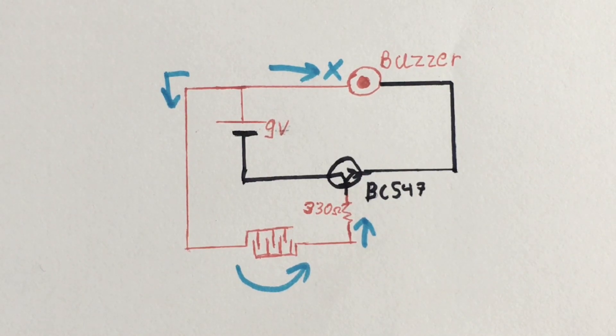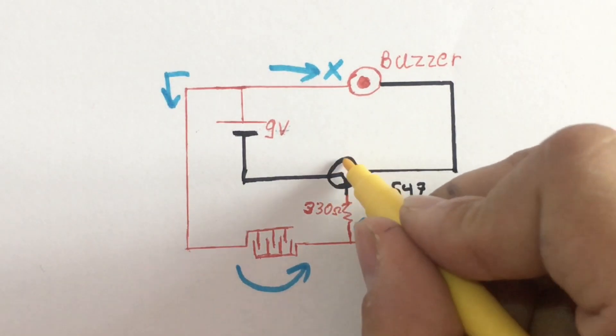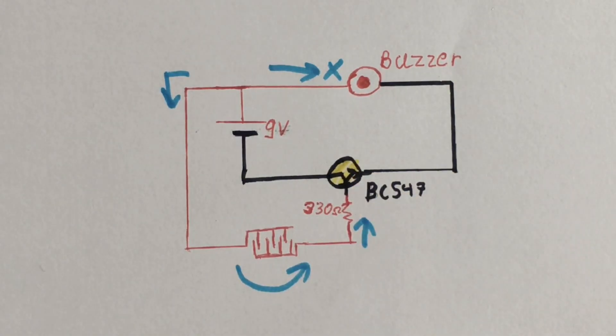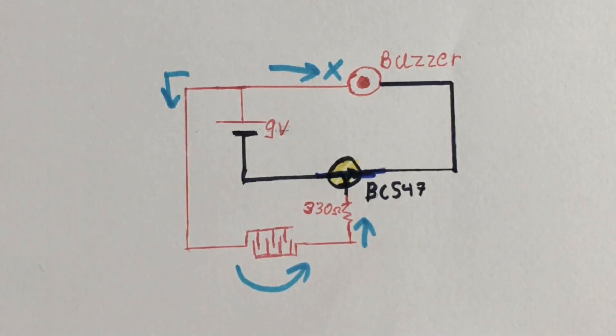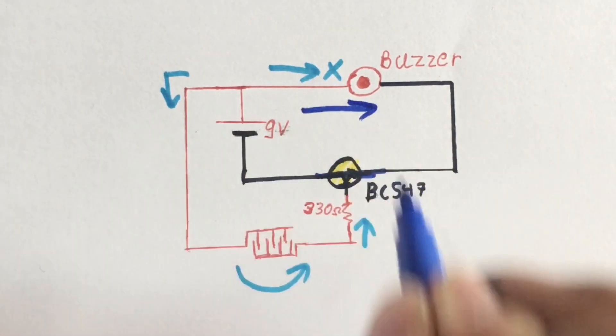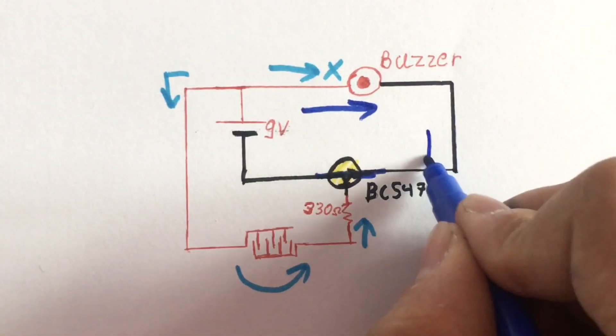Now since current is passing through the base of the transistor, our transistor is now turned on. Hence the collector-emitter path is now conductive, which means now current can flow through the buzzer into the battery.